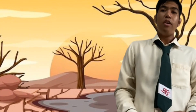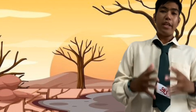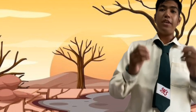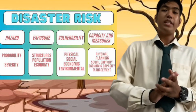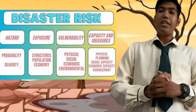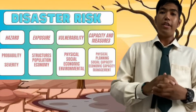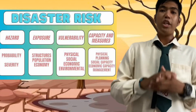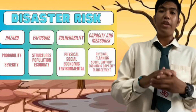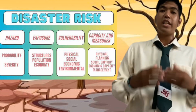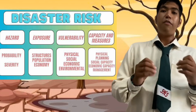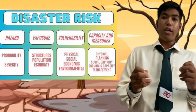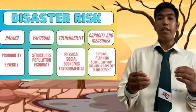Now, estimating disaster risk. In this figure, there are four things that are under disaster risk. First is hazard. Under hazard is severity, which refers to the potential impact or consequence of the hazard, such as injury, damage, or loss. Probability refers to the likelihood or frequency of the hazard occurring.